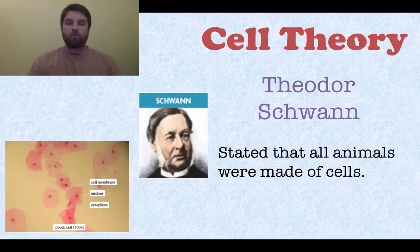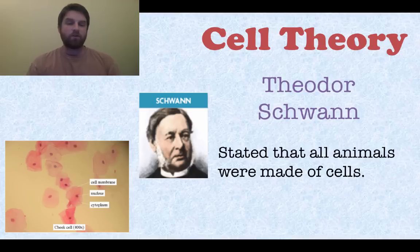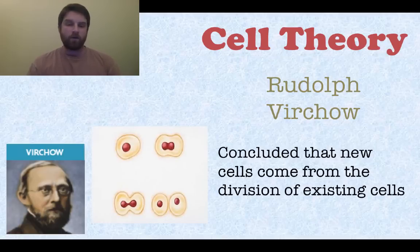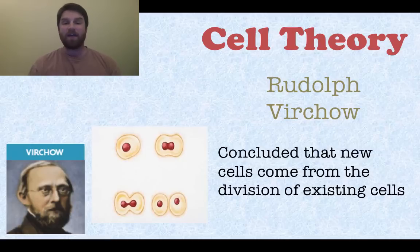Then you have Theodore Schwann, who stated that all animals were also made of cells. What he looked at is on the left as well. You can see the dark spots in those cheek cells — the dark spots are the nuclei, and there's a lot of cytoplasm all around it. The edges are the cell membrane, which we're going to get into later. Finally, we have Rudolf Virchow. He was the first person that said that new cells come from the division of existing cells — cells cannot just appear out of nowhere; they have to come from an existing cell.